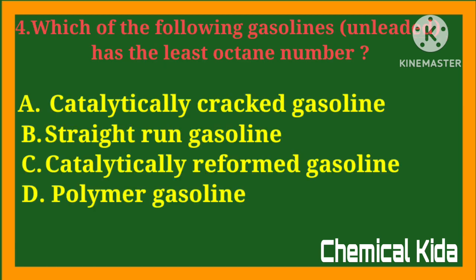Which of the following gasolines has the least octane number? a) catalytic cracked gasoline, b) straight run gasoline, c) catalytic reform gasoline, d) polymer gasoline. Answer: b) straight run gasoline.